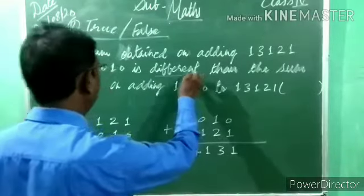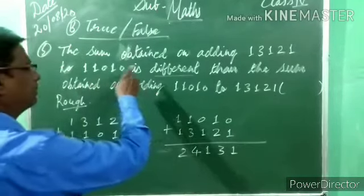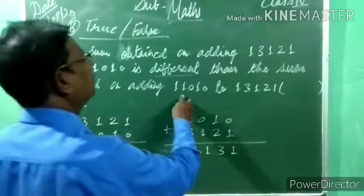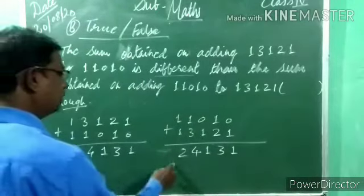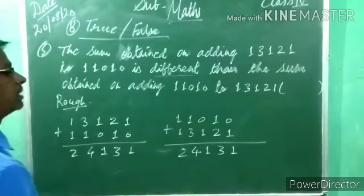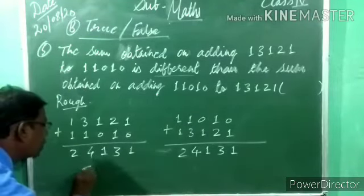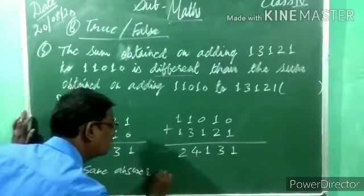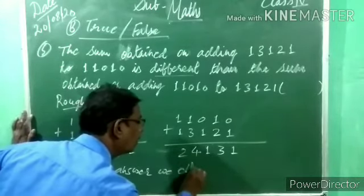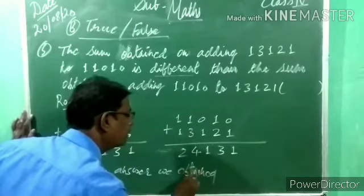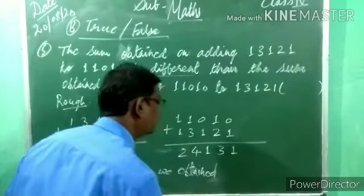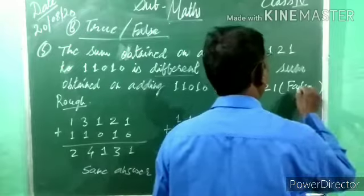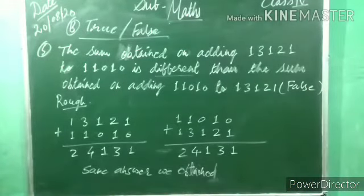Both sums give 24,131 — the same answer, not different. The statement says the sums are different, but addition is commutative — the order doesn't change the answer. So this statement is FALSE. Remaining things we will study in the next class.